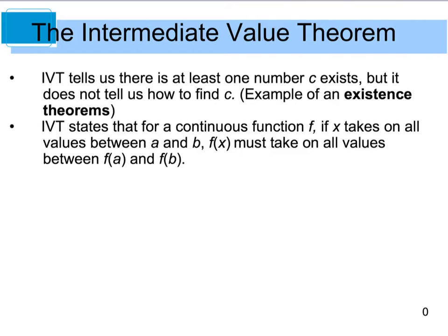...then we know for any height h between that three foot and three foot six inches, they must have at some time t hit a height h in the middle. So they didn't just go from three foot to three foot six overnight. They eventually, throughout that course of the year, hit every point in between. That's really what the intermediate value theorem is saying.